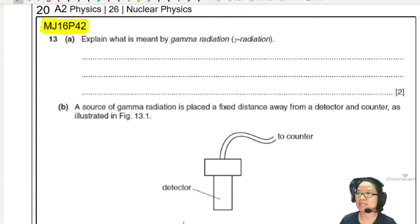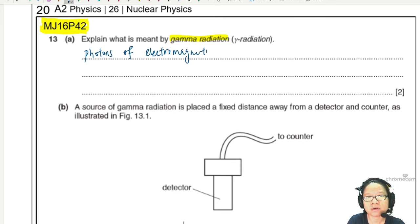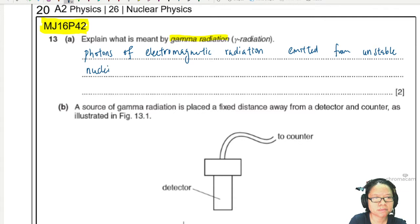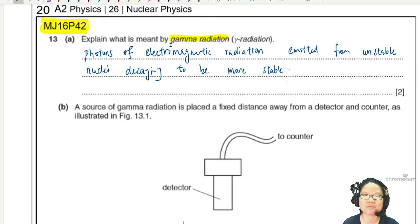Part A: Explain what is meant by gamma radiation. Gamma radiation is electromagnetic radiation. If you want to be more specific, this is when photons of electromagnetic radiation are emitted from unstable nuclei decaying to be more stable, letting all the gamma energy go to descend into a more stable energy level.